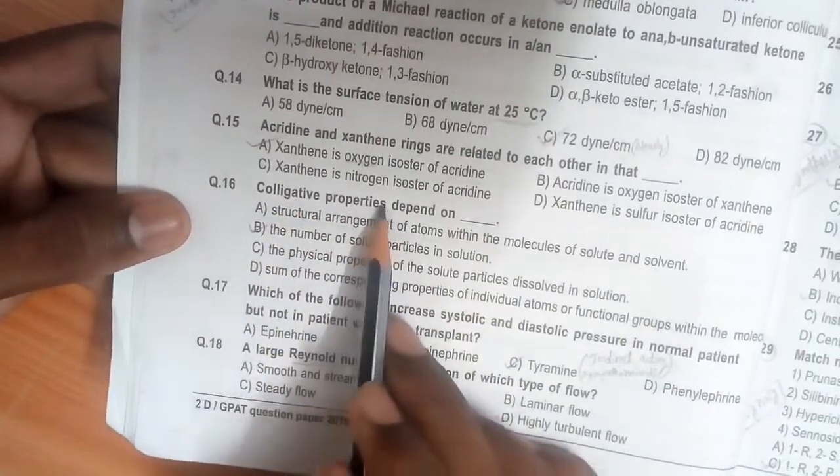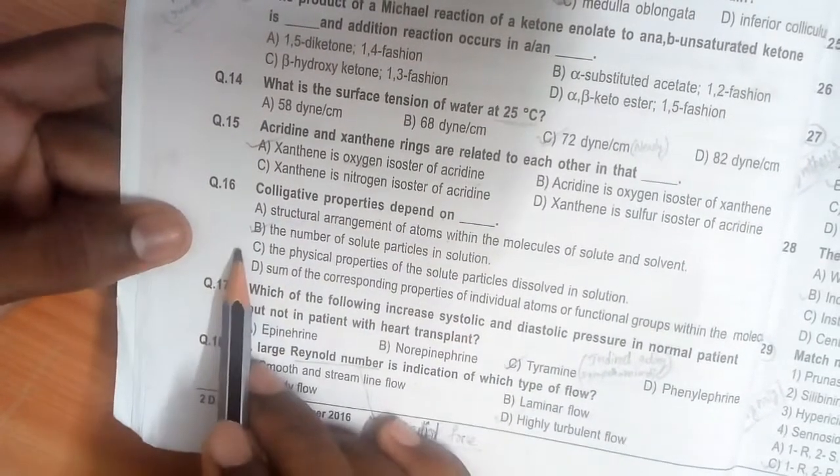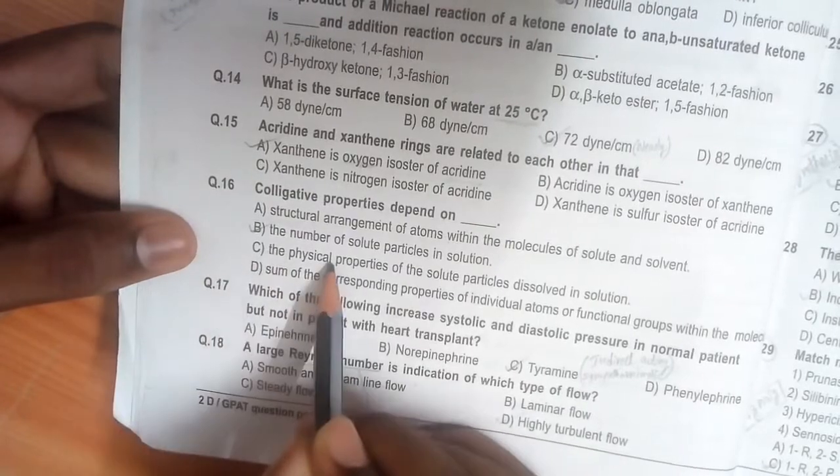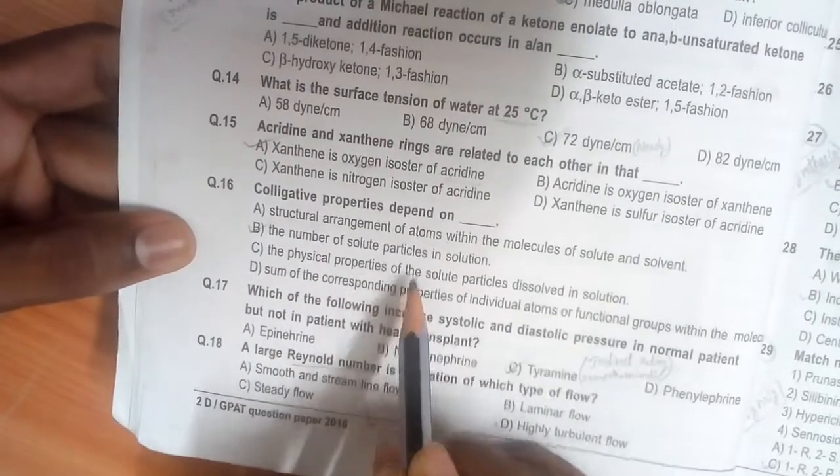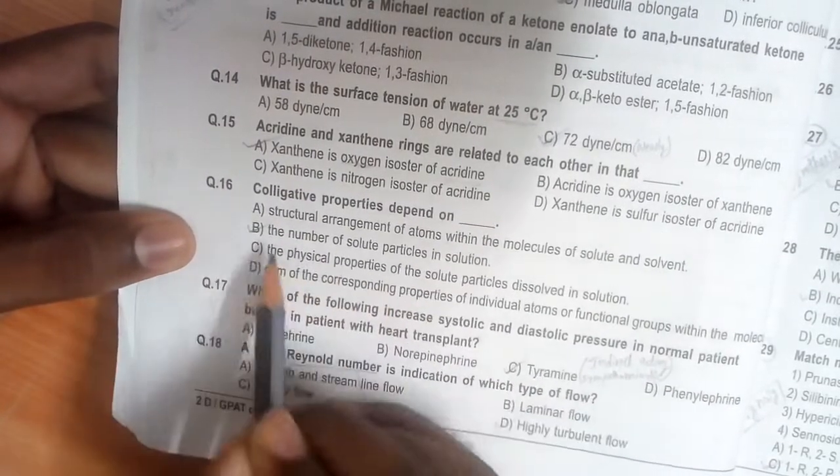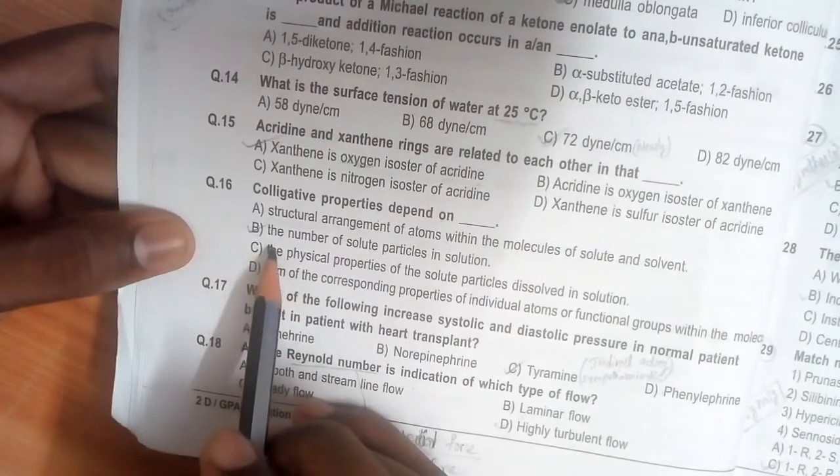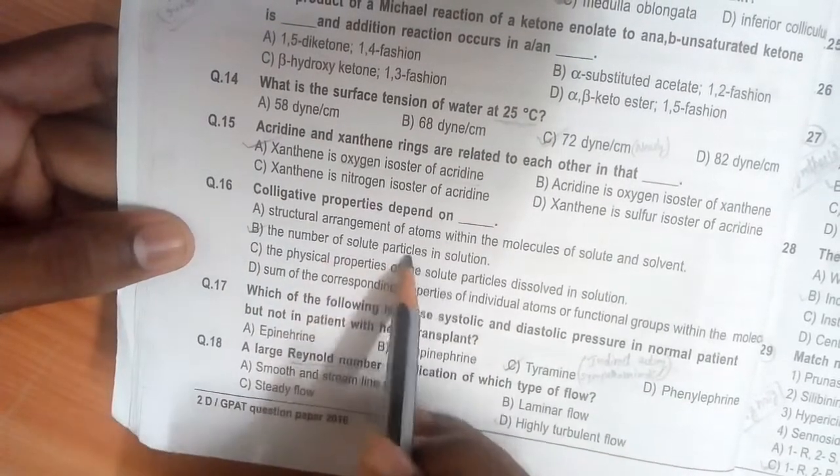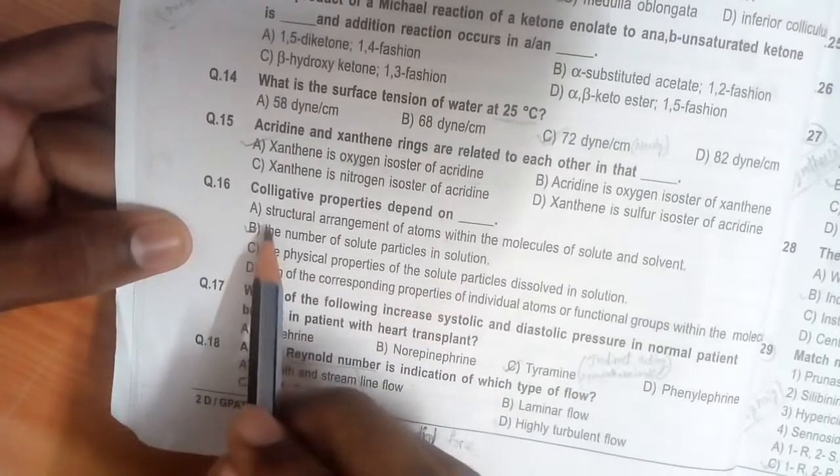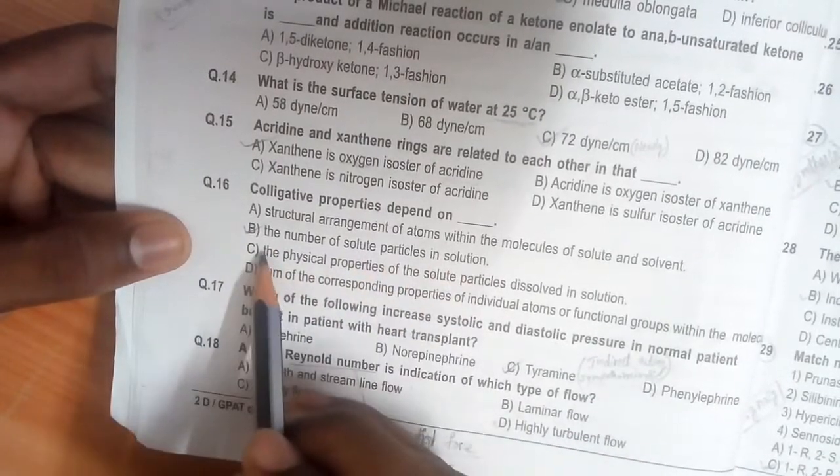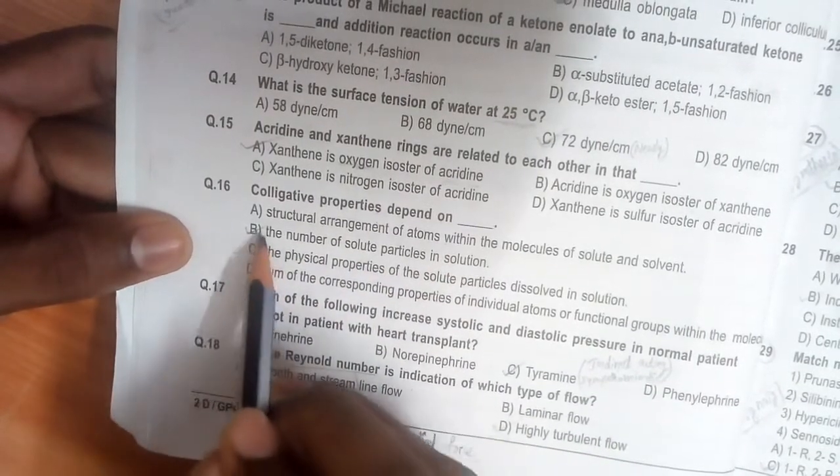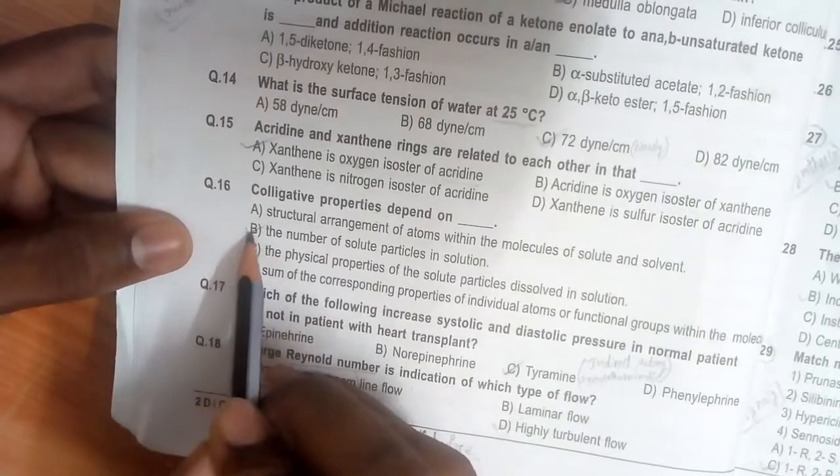Colligative properties depend on—actually physical properties we can say is correct, but it is non-specific. Specifically, they depend on the number of solute particles in solution. If this option is not there, you will go for option C, but B is more accurate. That's why we go for option B.